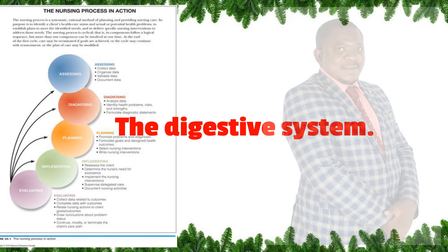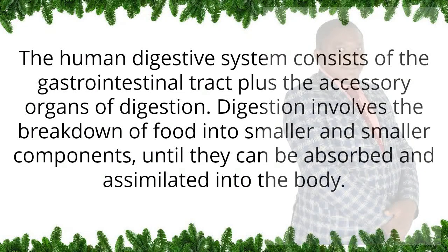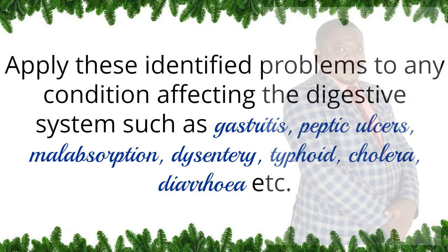The human digestive system consists of the gastrointestinal tract plus the accessory organs of digestion. Digestion involves the breakdown of food into smaller and smaller components until they can be absorbed and assimilated into the body. Apply these identified problems to any condition affecting the digestive system such as gastritis, peptic ulcers, malabsorption, dysentery, typhoid, cholera, diarrhea, etc.